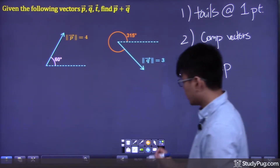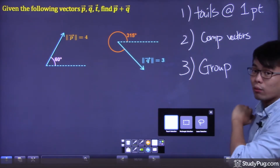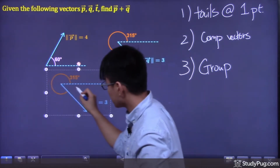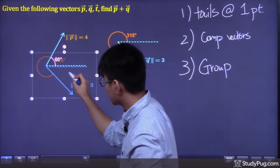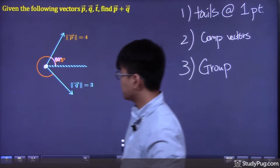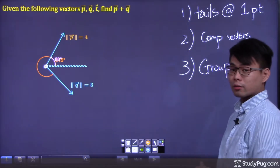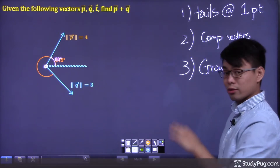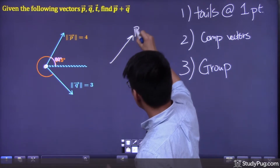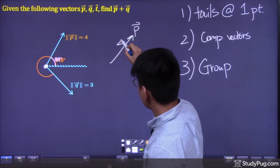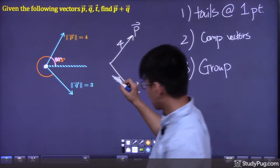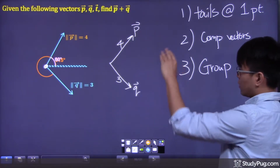For the first step, we get all tails connected at one single point — moving vector q so its tail connects with vector p's tail. That's the first step done. For the second step, we need to split all these vectors into two components. We have vector p going this way with a magnitude of four, and vector q going down with a magnitude of three. Let's take a look at vector p first.